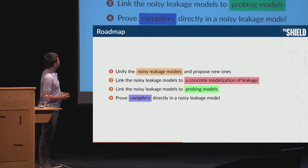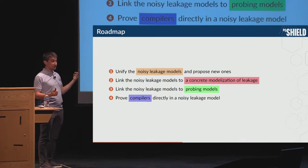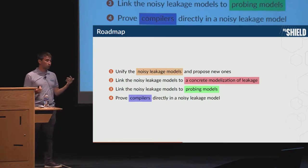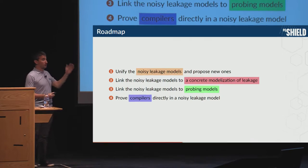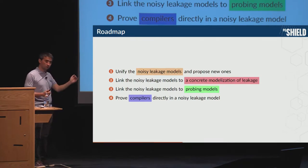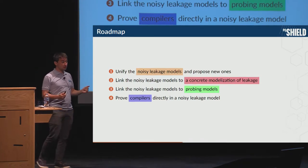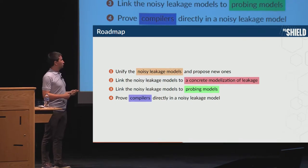The roadmap will be as follows: we will unify the noisy leakage models and propose new ones; then link the noisy leakage models to the concrete modelization of leakage (the top layer); then link the noisy leakage models to probing models (the layer just underneath); and finally prove compilers directly in the noisy leakage model.